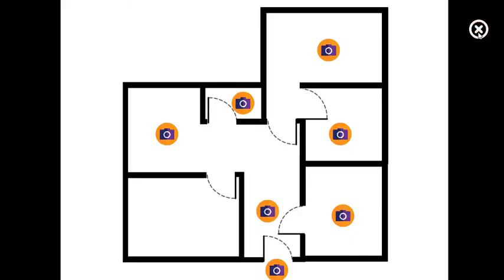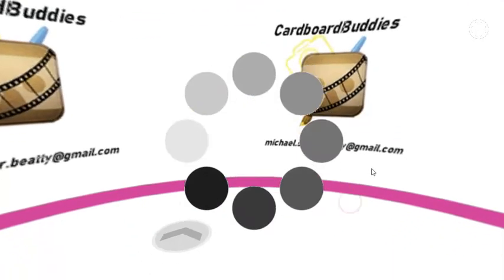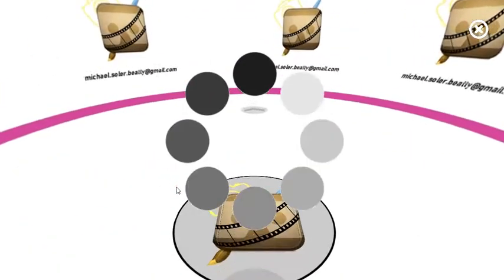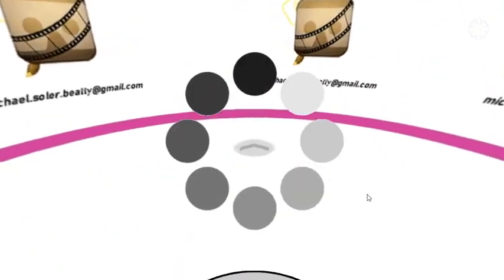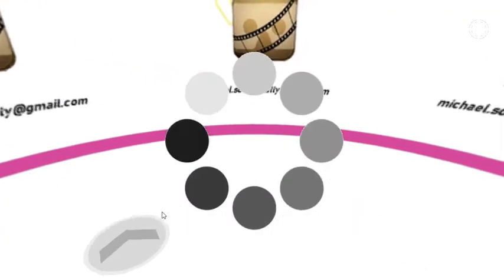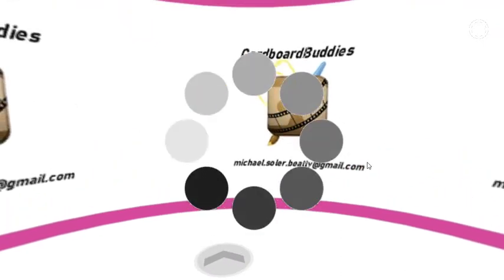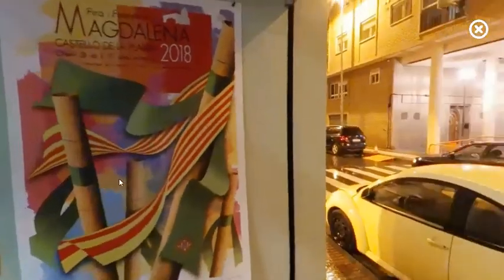There is also an auto-rotation effect. To close, click the close button on the top right. Last of all, let's show how the 2D scene works — it works like a Google Maps application, where you can move from one room to another using the arrows.